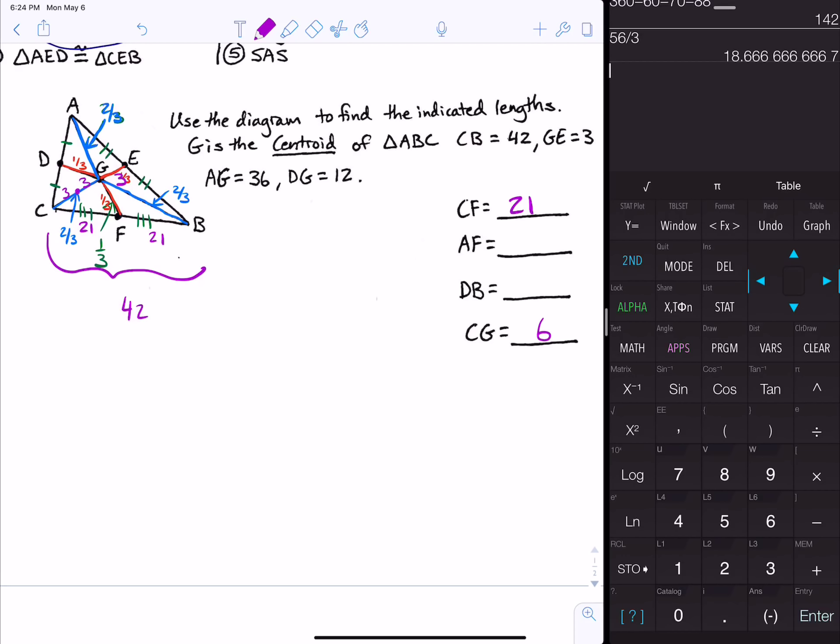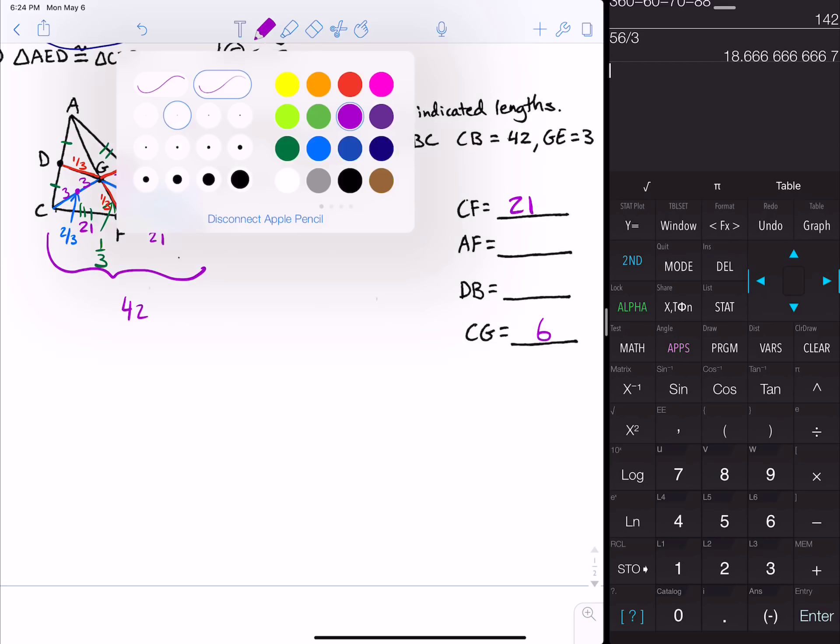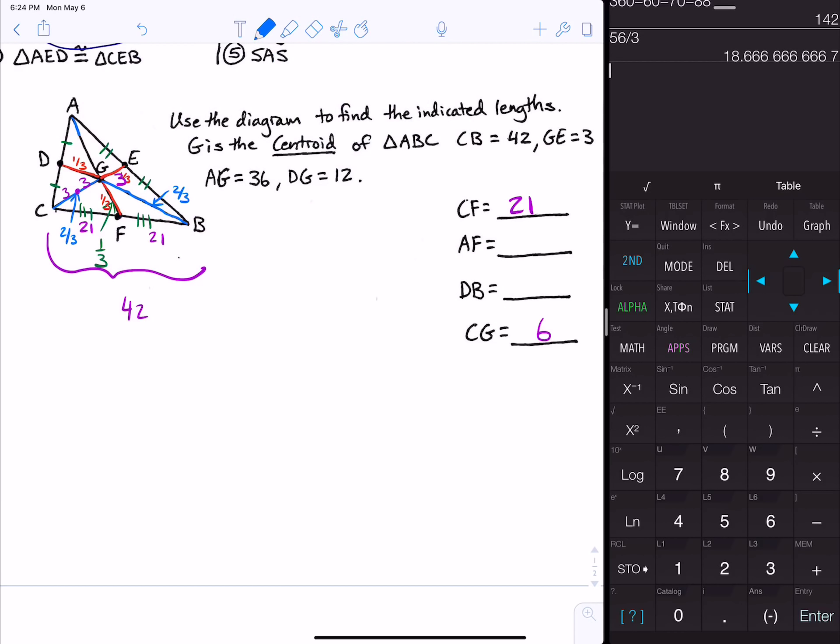AF is the total. They gave us AG is 36 and that is two-thirds. Then each third is equal to 18. Therefore AF would be 18 times 3, which would be 30 plus 24, which is 54.